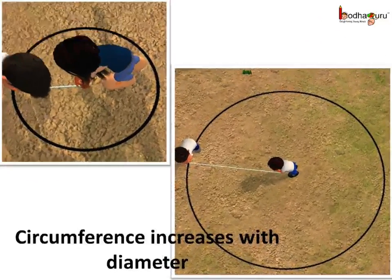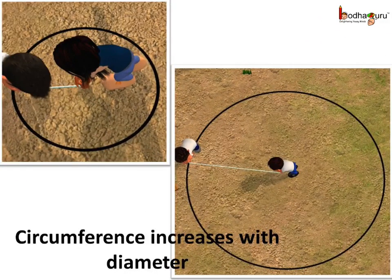What do we see? As the diameter got bigger, the circumference got bigger too. But there is a certain relation between the circumference and the diameter, and that remains the same always.